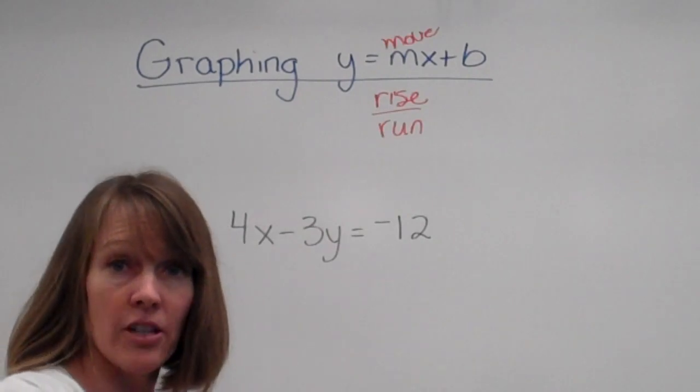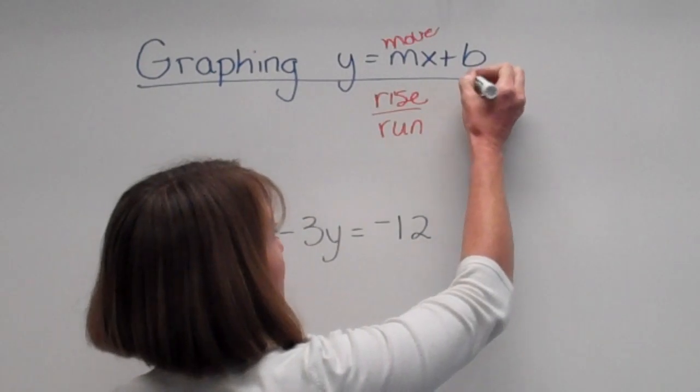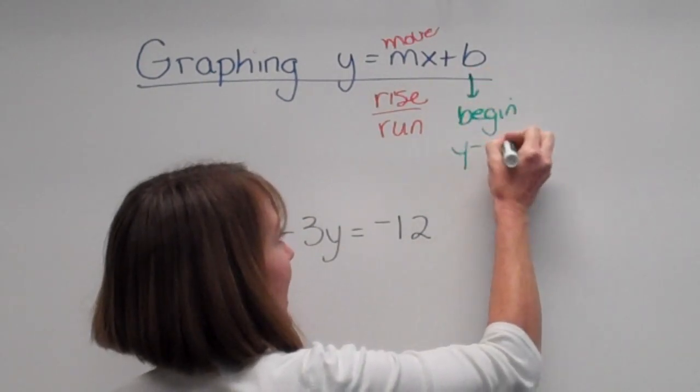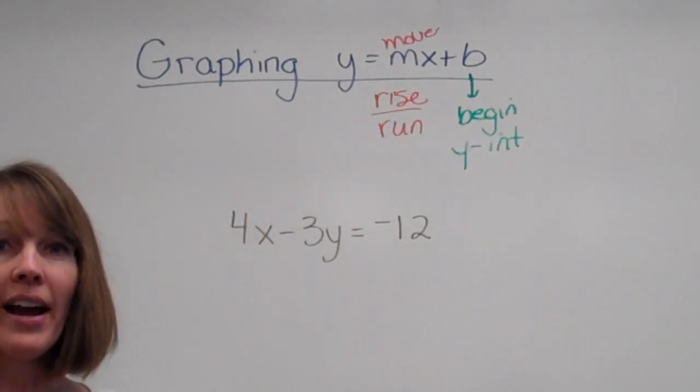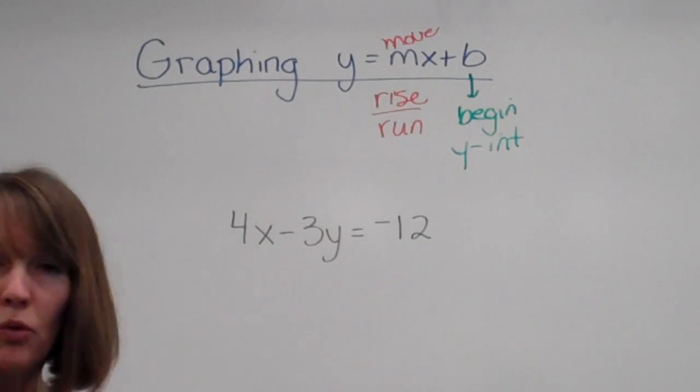Now we know that b is our y-intercept, and our y-intercept is where we start. So it's where we begin, our y-intercept. Alright, so if it says y equals mx plus b and the y is alone, we are ready to graph.